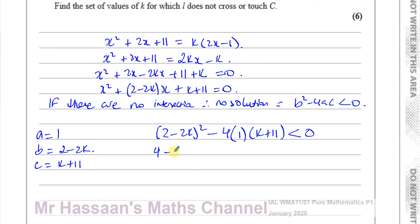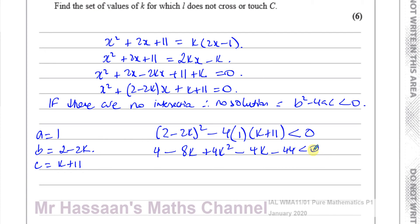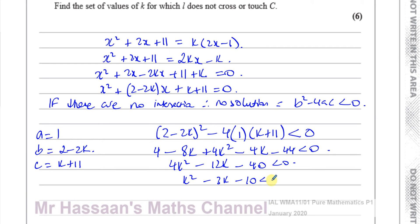Expanding: 4 minus 8k plus 4k squared minus 4k minus 44 less than 0, which simplifies to 4k squared minus 12k minus 40 less than 0. Dividing through by 4 gives k squared minus 3k minus 10 less than 0.